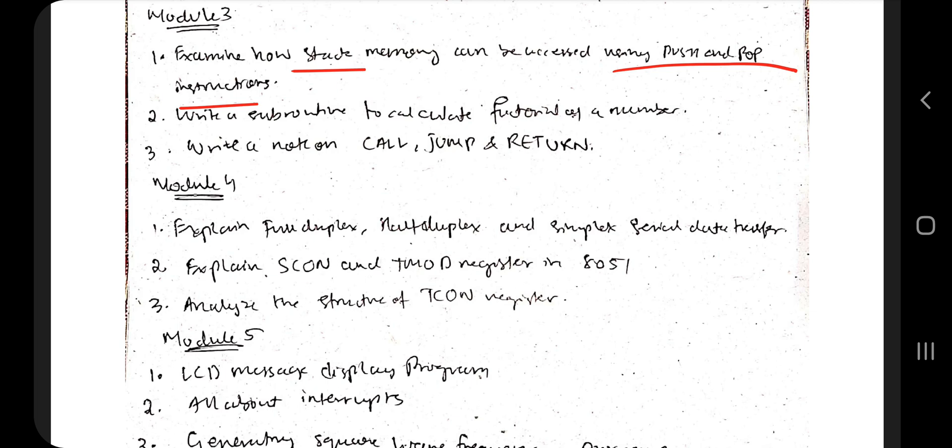One of the programs is calculate the factorial of a number - you have to write the subroutine. Know the syntax of it and then you can easily write the program. Don't memorize the program by heart for all programs. Know the logic and write the program in your own words. Practice a few of them. Explain the call, jump, and return statement - that's also very important from exam point of view.